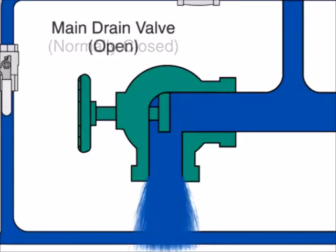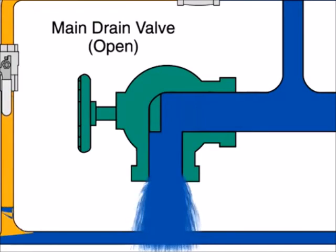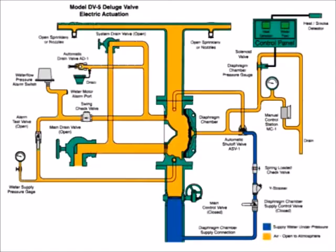Then the main drain valve and all auxiliary drains are open to drain water from the system. Once the system stops discharging water, close all drains except the main drain valve.